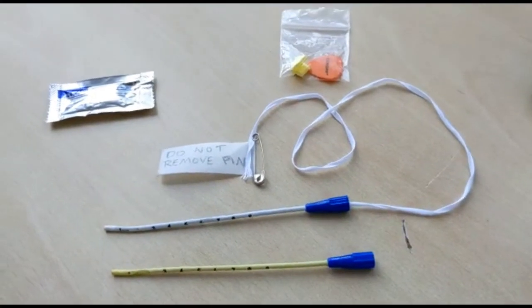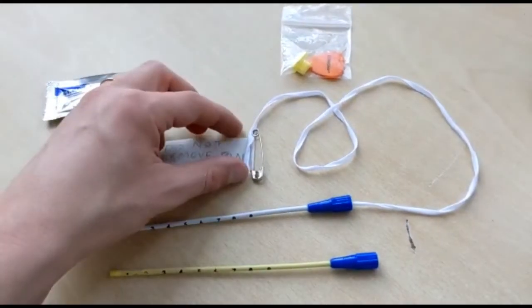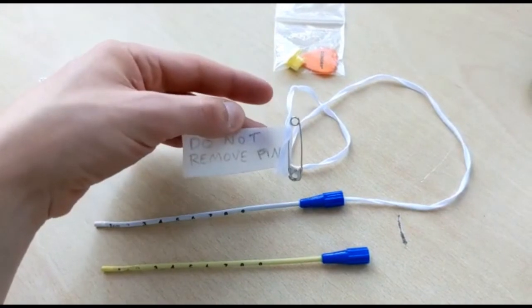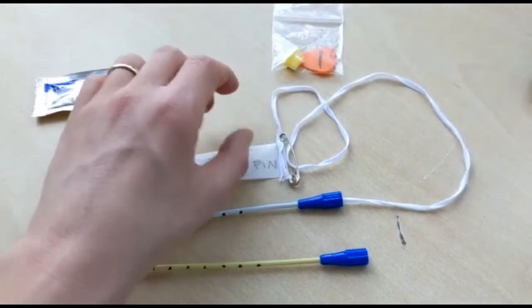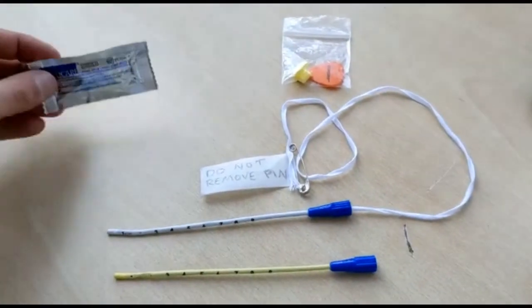In the test kit there is a safety pin on the end of the white string. This is only to make the test kit reusable. Lubricant is supplied in the pack. It is usually required but not with a test kit.